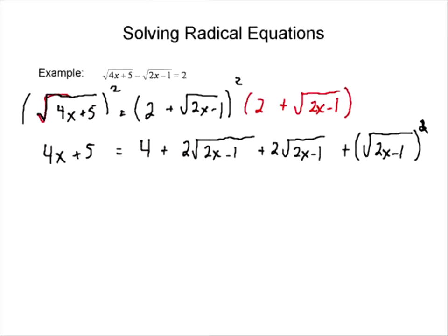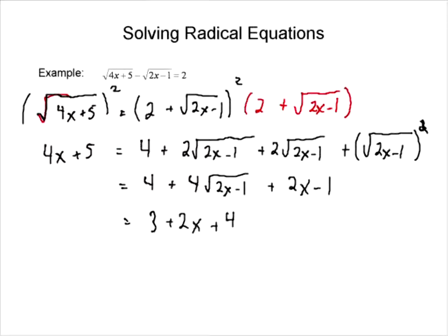You might not have seen that for a while — squaring a binomial with a radical inside — but when we combine like terms, we're going to get 4 plus 4 root of 2x minus 1, plus 2x minus 1. One more step: we're going to get 3 plus 2x plus 4 root of 2x minus 1, and the other side becomes 4x plus 5. That's how we got rid of the first radical.